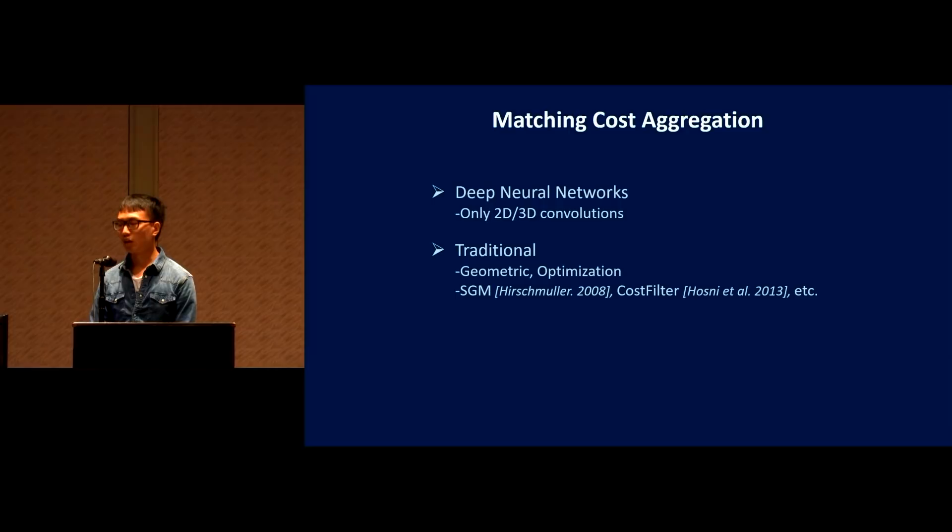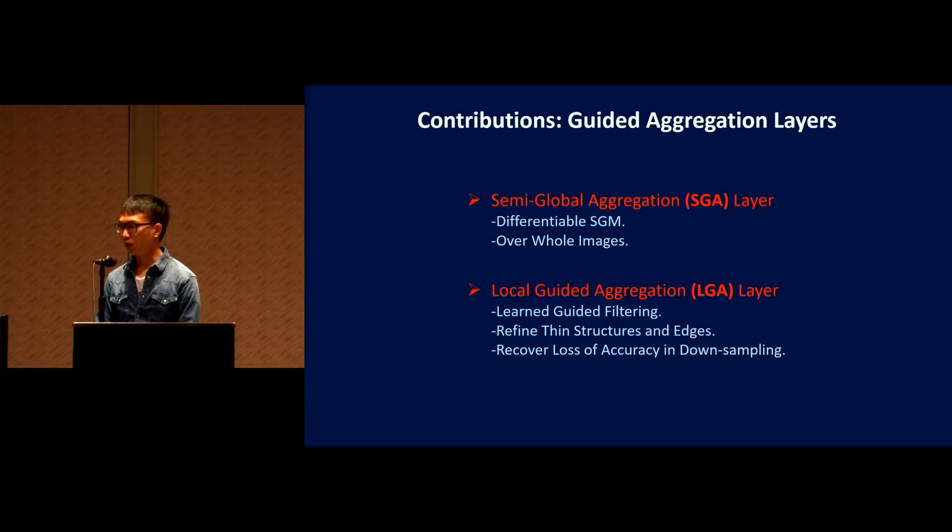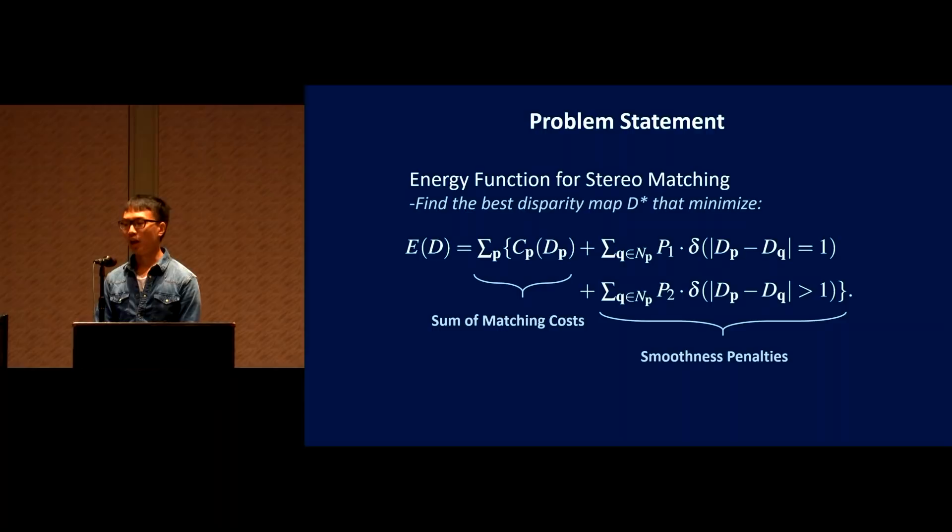For matching cost aggregation, currently only 2D or 3D convolutions are widely used for deep neural network models. But there are many effective traditional methods which are usually geometric and optimization based, including the famous SGM and the cost filter framework. Our target is to formulate traditional geometry and optimization into the deep neural network models. Our contributions are two guided aggregation layers.